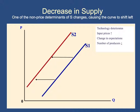Things that can shift the supply curve left include: if technology becomes worse — if a machine cannot produce as much as before, you'll have to buy more machines, increasing the cost of each unit of output, so you're willing to supply less output at every given price, shifting the supply curve left. Also, if input prices increase — for example, if you produce tables and suddenly the price of wood rises, you're going to be willing to supply fewer tables at every price level because it becomes more expensive to produce them, shifting the supply curve to the left.